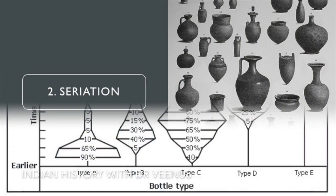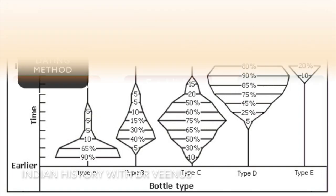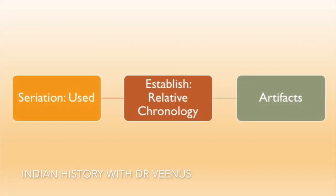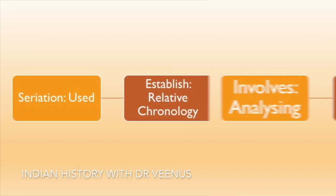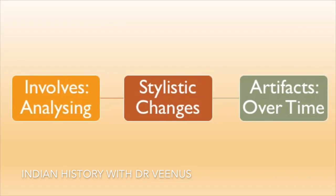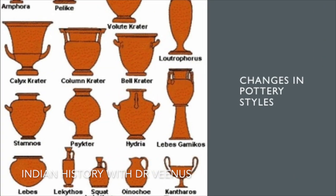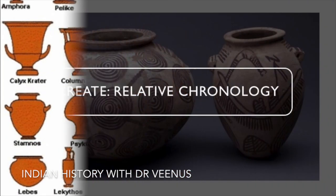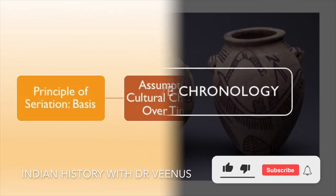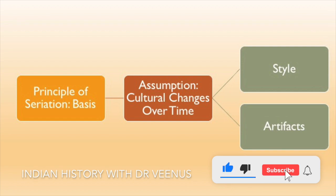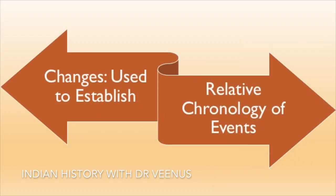Seriation is a relative dating method used to establish the relative chronology of artifacts. It involves analyzing the stylistic changes in artifacts over time, such as changes in pottery styles, to create a relative chronology. The principle of seriation is based on the assumption that cultural styles and artifacts change over time, and that these changes can be used to establish a relative chronology of events.